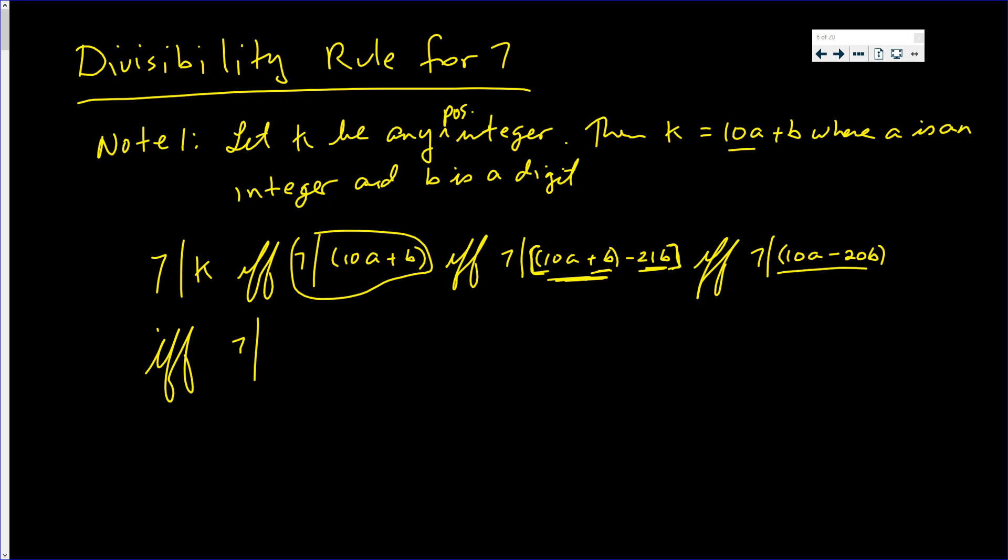I'm just going to write this differently. I'm going to factor out the 10. Now 7 does not go into 10, so the only way 7 is going to go into this number is if and only if 7 goes into a minus 2b. And that's your rule.